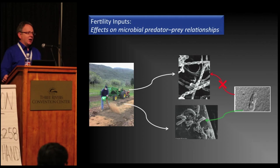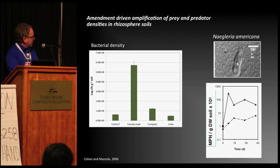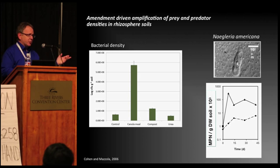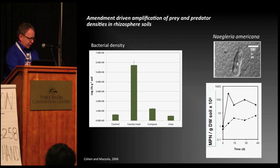Looking at the effect of different fertility inputs on bacterial numbers — comparing compost, urea, and canola meal — canola meal resulted in dramatically increased bacterial densities, and Naegleria really liked that outcome. We saw approximately a two-order-of-magnitude increase in the density of that protozoan following canola meal addition. We can use this information to modify those communities in a way that may benefit overall plant development in the long run.